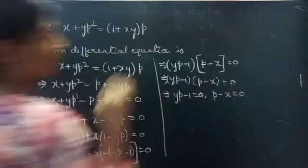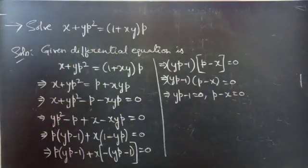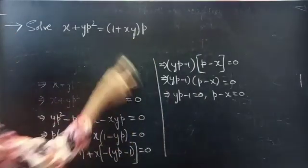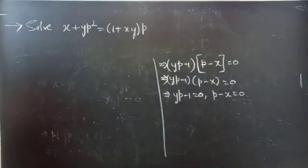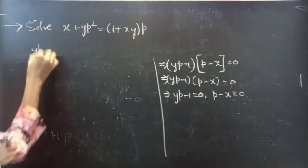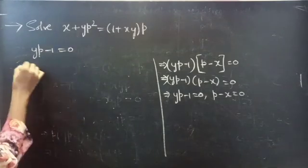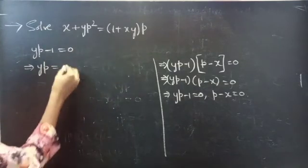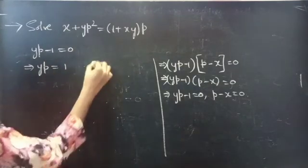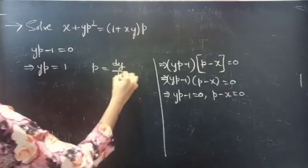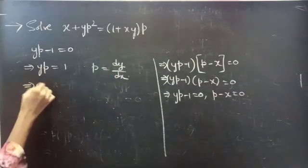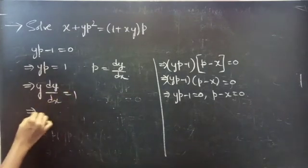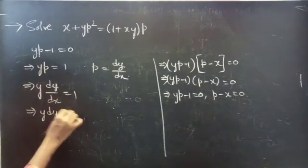This gives us two factors: yp minus 1 equals to 0 and p minus x equals to 0. Consider the first one: yp minus 1 equals to 0, so yp equals to 1. Substituting p equals to dy/dx, we get y into dy/dx equals to 1, which gives y dy equals to dx. The variables are separable.